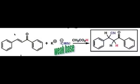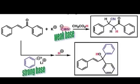At the top of this slide, you'll notice that weak bases tend to do conjugate addition to carbonyl compounds, whereas below it, you'll see that a strong base, such as phenyl lithium, tends to do direct addition to carbonyl compounds.